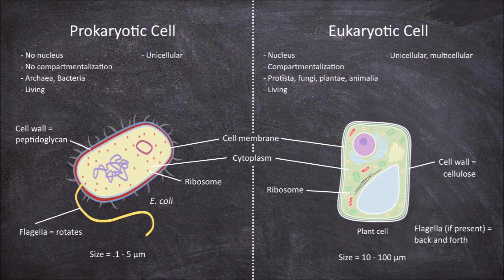Within the cell, prokaryotes do not have compartmentalization of structures, which means they do not have any membrane-bound organelles. Eukaryotes, on the other hand, have compartmentalization within the cell and do have membrane-bound organelles such as the mitochondria or chloroplasts.